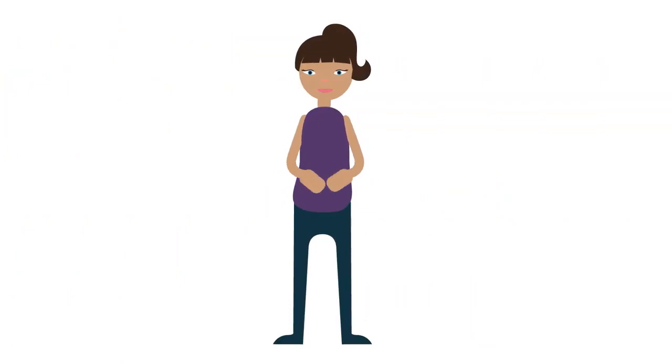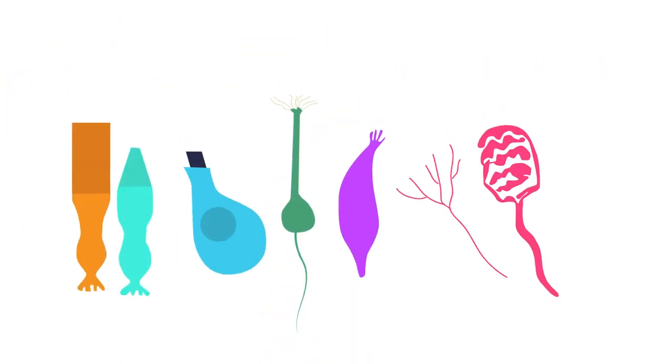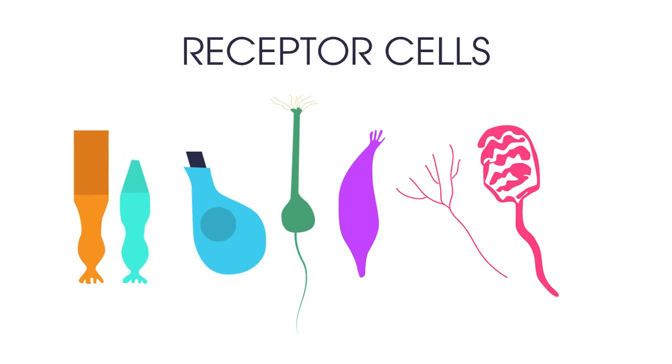For example, if you are too cold, you may put a jumper on. Sense organs in animals have groups of receptor cells which detect specific stimuli.